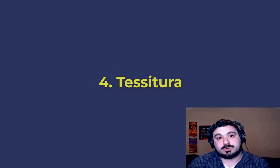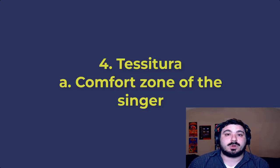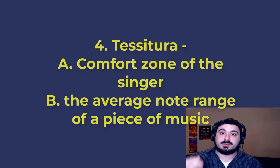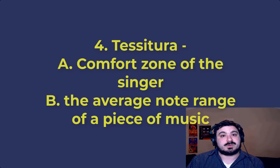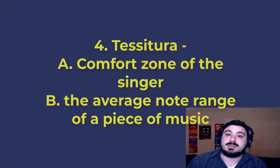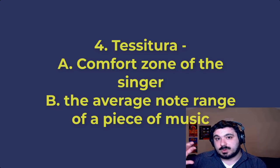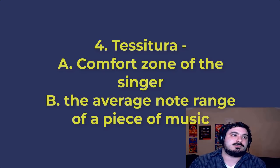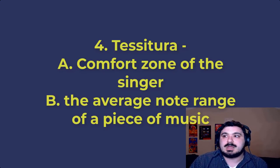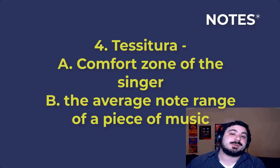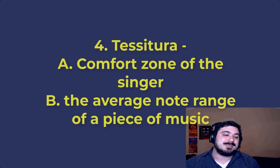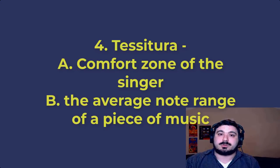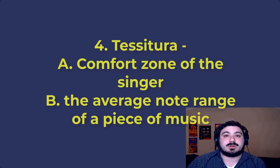Next up, tessitura. The term tessitura can refer to a couple of things. One, it can refer to the singer's comfort zone — the range of pitches where the voice is most comfortable or most efficient. And it can also refer to the average section of a range that a piece operates in. For example, if I sang a piece that stayed mostly between F3 and B3, that range would be the tessitura of that piece, even if the piece occasionally goes above or below those notes.